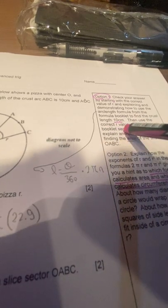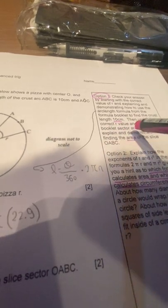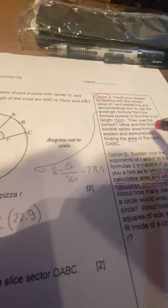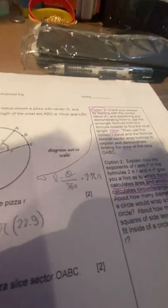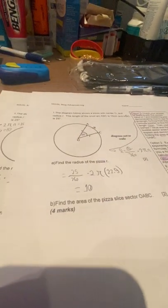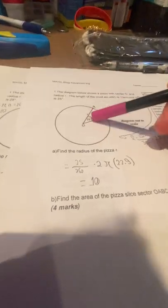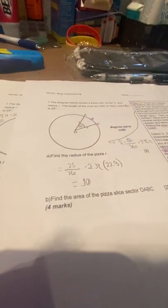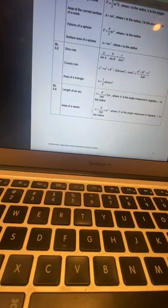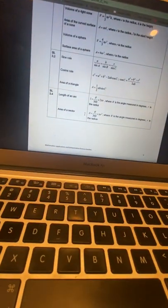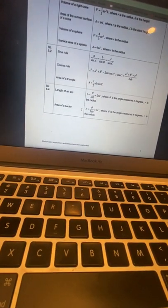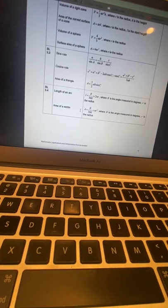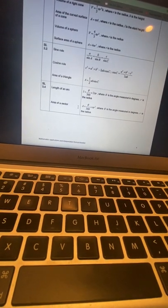Then use the correct R value and the formula booklet sector area formula to explain, demonstrate finding the area of the slice. So in order to find the area of the slice, we can use the area formula, which is the last one right here, that's gonna be area equals theta divided by 360 times pi R squared.